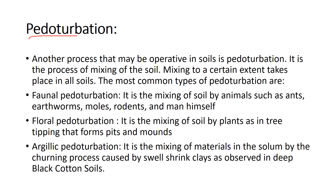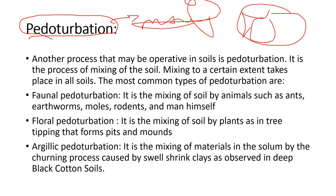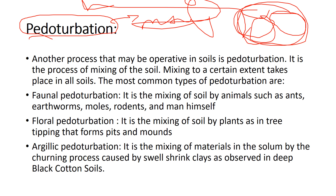The next process is pedoturbation — turbation simply means mixing of soils. On a soil surface you can have black soil, wet soil, alluvial soil, and mountain soil; the combination and mixing of all these soils is called pedoturbation. There are three types: faunal pedoturbation, floral pedoturbation, and argillic pedoturbation.